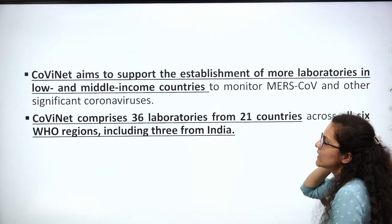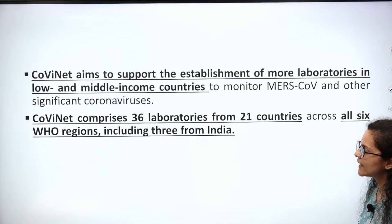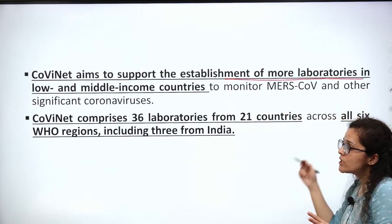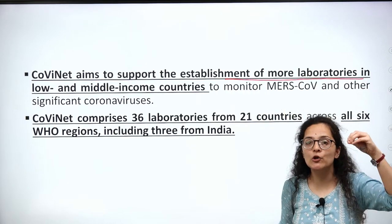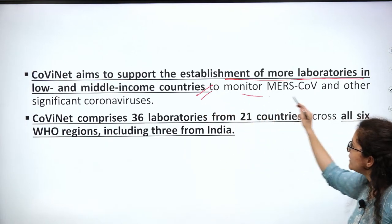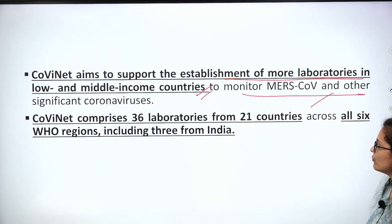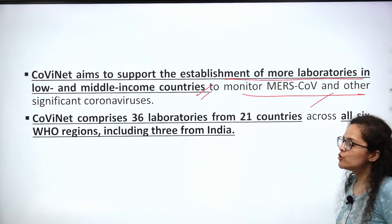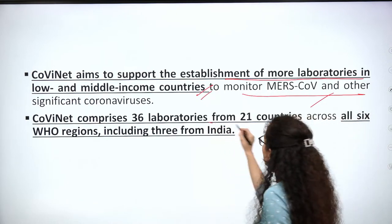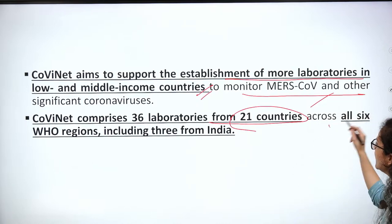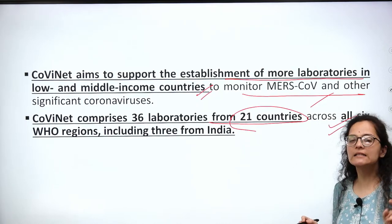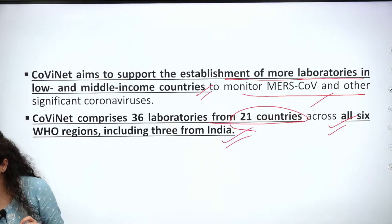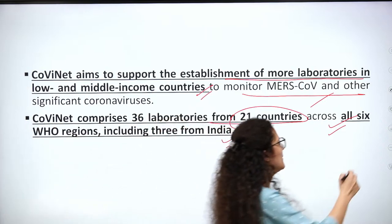COVID-net's aim is to support and establish more laboratories in low and middle income countries, so they can monitor MERS, COVID, and other significant coronavirus events. COVID-net comprises 36 laboratories from 21 countries, across all six WHO regions. Importantly, 3 of these laboratories are in India.